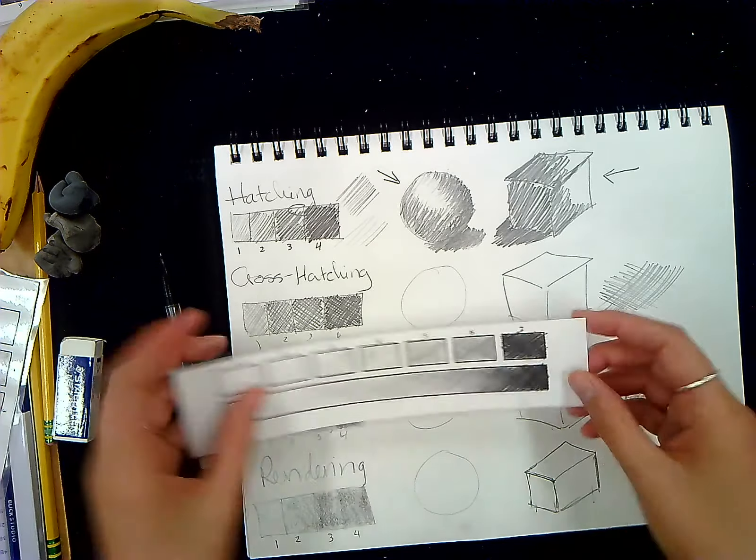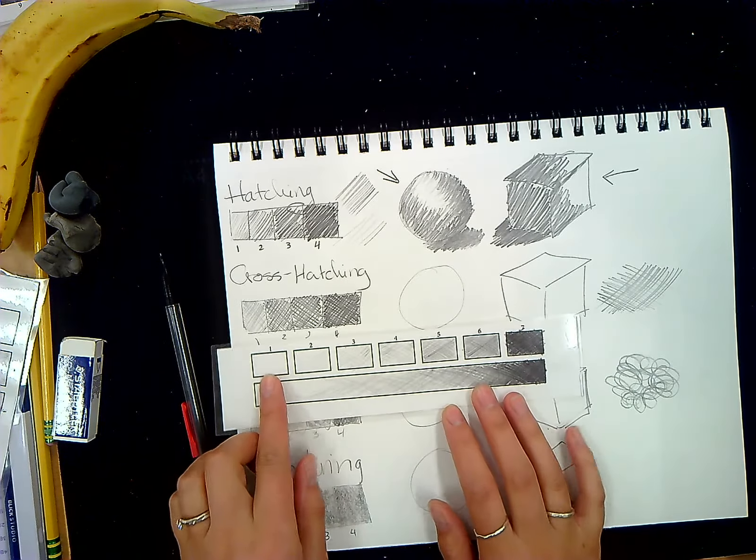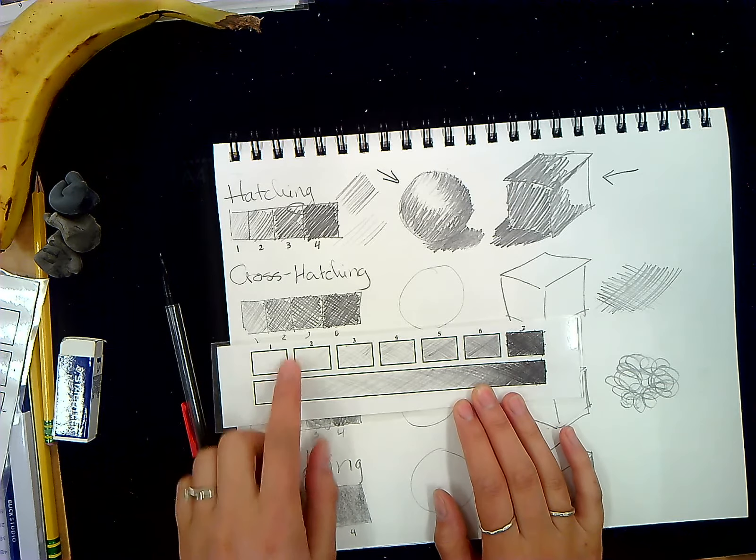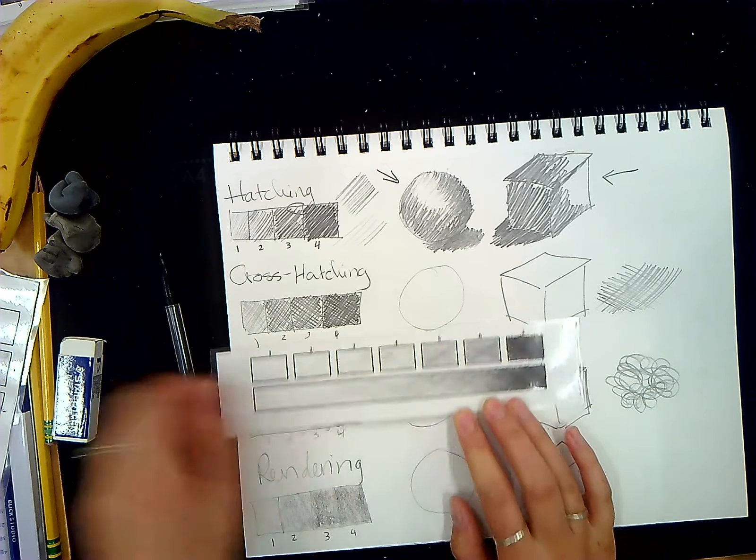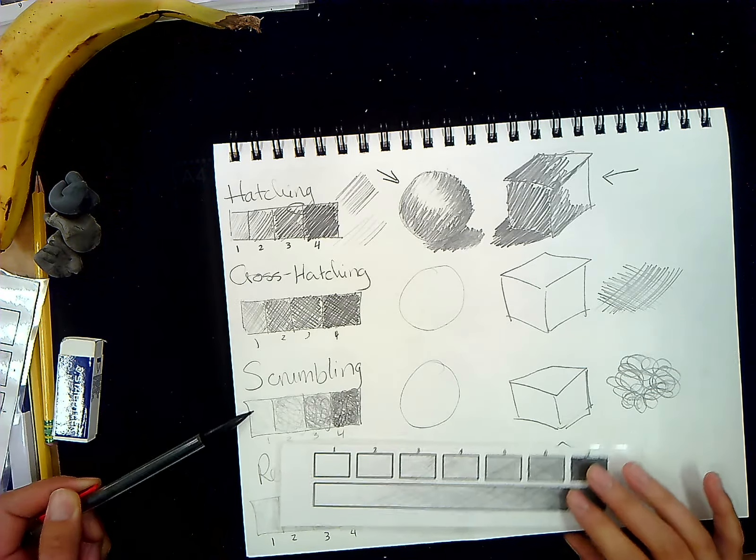Here is an example with cross-hatching. Notice it's a 7-step value scale, so 1 being blank or white. And as it moves across and gets higher in number, it gets darker. So, you are going to be doing that with each drawing technique.